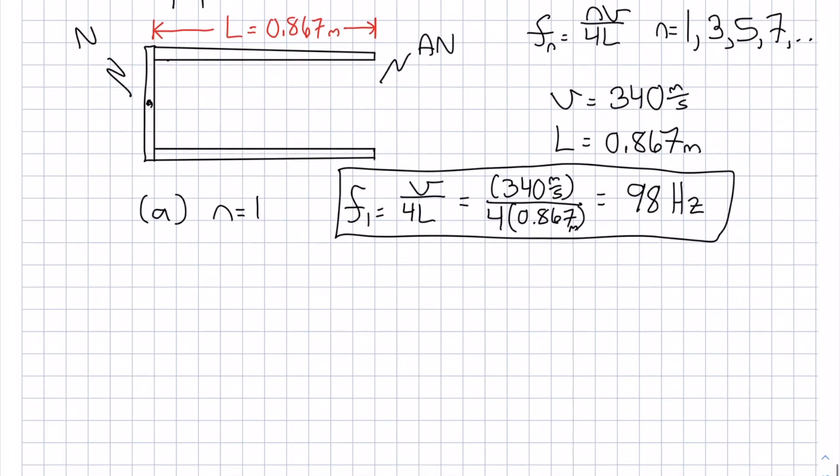Now let's look at b. B is for the first overtone. But you'll notice there is no n equals 2. So the first overtone that's allowed is n equals 3. So f3 will be 3v over 4L, or 3 times f1, which gives you 294 hertz.